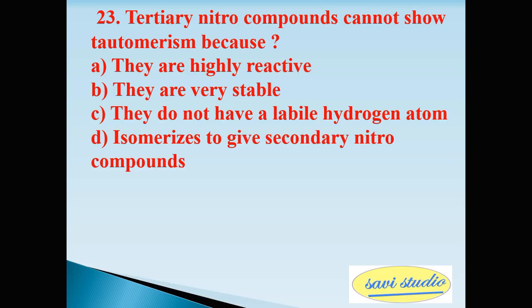Twenty-third question answer: tertiary nitro compounds cannot show tautomerism because they do not have a labile hydrogen atom.